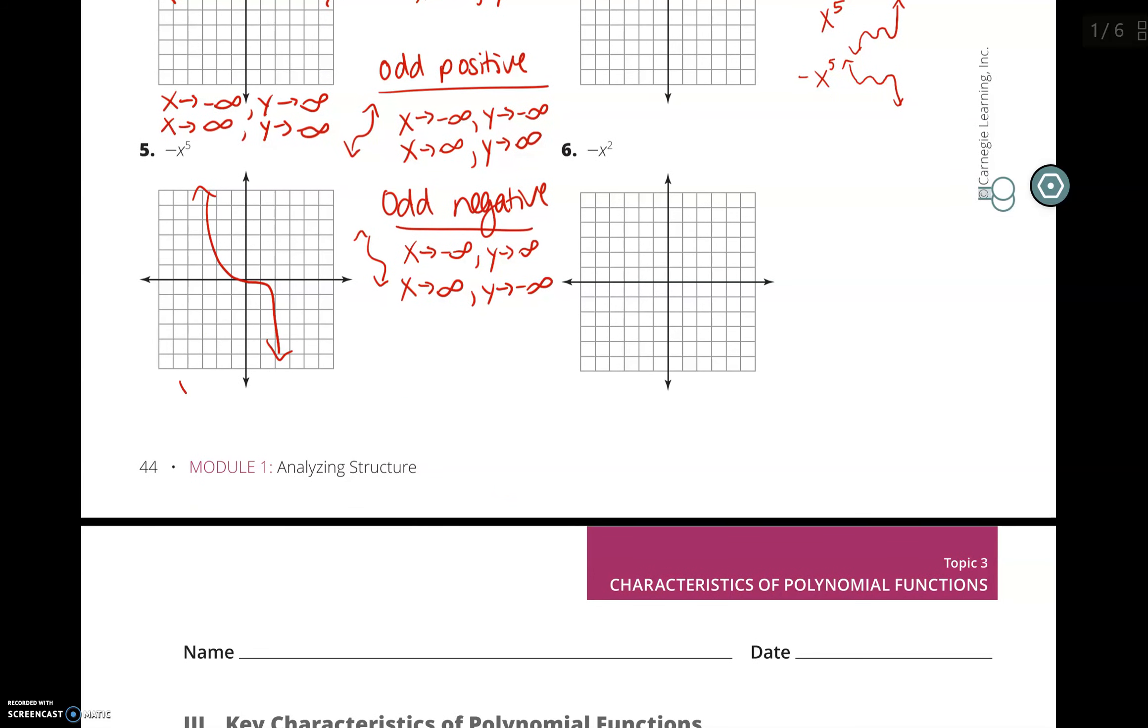And number five, as x approaches negative infinity, my y values are getting bigger, so it would approach positive infinity. As x approaches positive infinity, my y values get smaller, so y would approach negative infinity. So as my x values get small, my y values get big. As my x values get big, my y values get small.